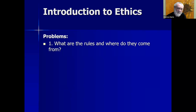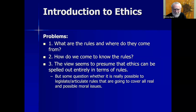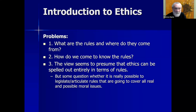Problems with deontological theories: what are these rules, and where do they come from? The person proposing a deontological system not only needs to articulate what the rules are, but also explain how they arise, where they come from, and what justifies them. How do we come to know these rules? It doesn't seem to be a straightforward empirical matter — it's not like we can do biology to discover them. The view also seems to presume that ethics can be spelled out entirely in terms of rules, but some question whether it's really possible to legislate rules that cover all real and possible moral issues, since human interactions are very organic and unpredictable.